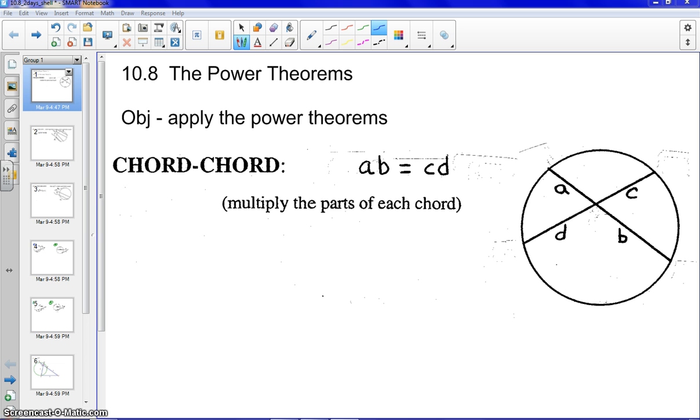So if I go ahead and just put an example on here, if I let A equal 3, I'll let C equal 2, B equal 6, let's go ahead and find D. So again, the chord is broken up into two parts, so our first chord would be A times B, so part times part, 3 times 6, equals part times part of the remaining chord, 2 times D. So solving that would give us D equal to 9.